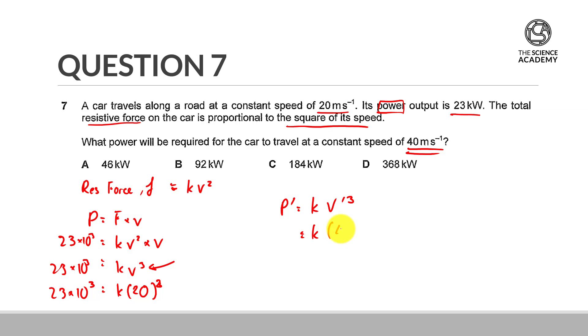Our new speed is going to be 40 meters per second, and so we need to get rid of our k. So to do so, we take left divided by left, right divided by right. So we have p prime over 23 times 10 to the power of 3, which is equal to 40 cubed over 20 cubed.